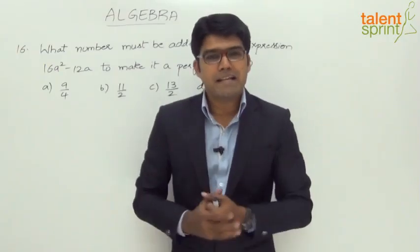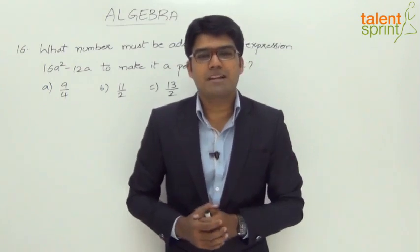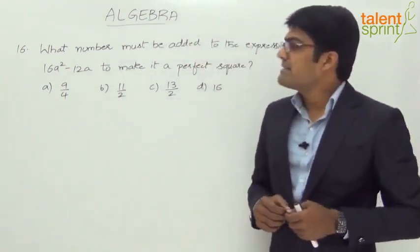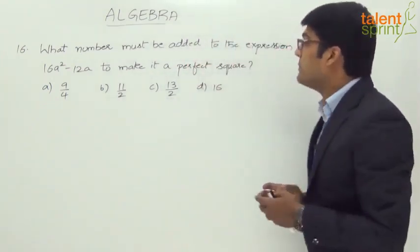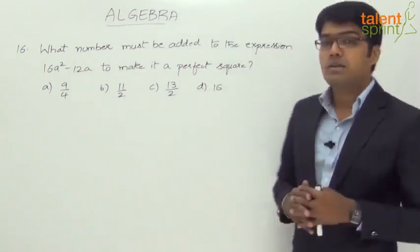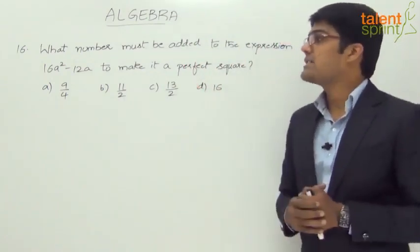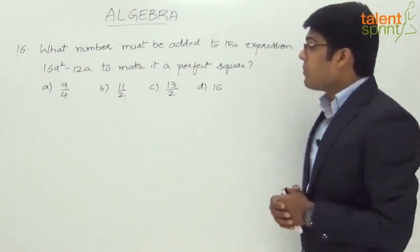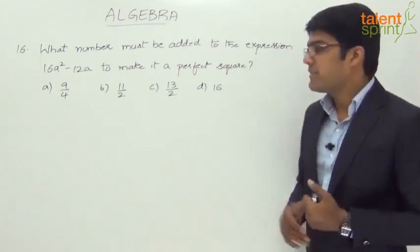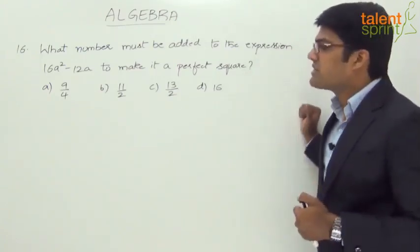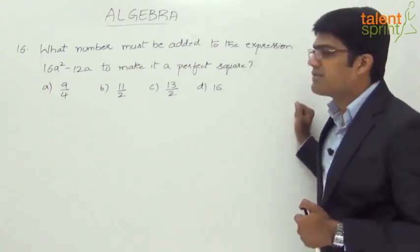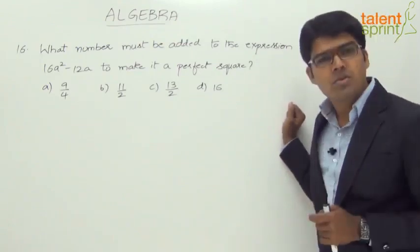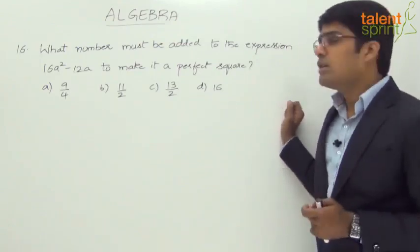Moving on to a simpler question: what number must be added to the expression 16a² minus 12a to make it a perfect square? We have four answer options: 9/4, 11/2, 13/2, and 16.